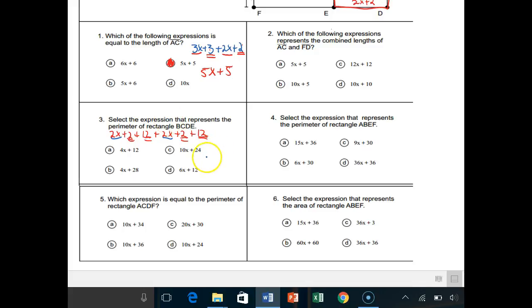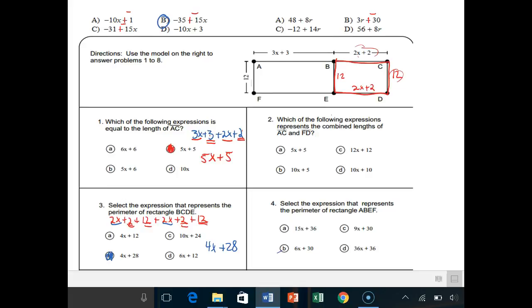2x and 2x gives me 4x. 2 plus 12 is 14, 2 plus 12 is 14. So then 14 plus 14 gives you 28. Basically this problem is just asking you, you have this really long expression and we want you to just simplify it. But they're giving it to you in a geometry question.